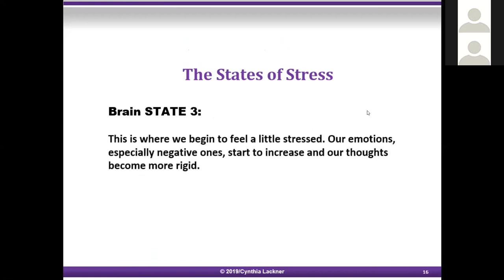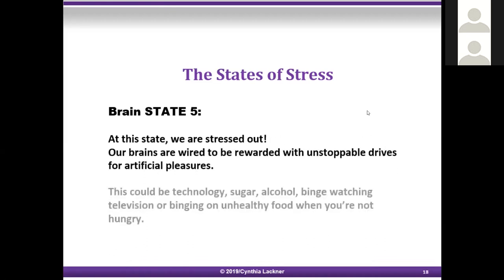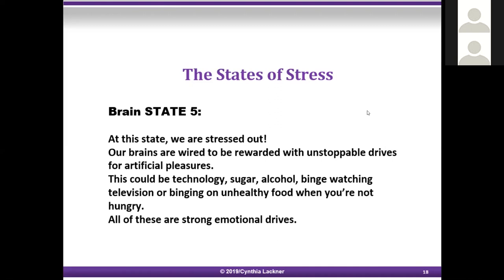Brain state three: this is where we begin to feel a little stressed — our emotions, especially negative ones, start to increase and our thoughts become more rigid. Brain state four: by this state we are definitely stressed, feeling needy or distant and disconnected. Brain state five: we are stressed out — our brains are wired to be rewarded with unstoppable drives for artificial pleasures. This could be technology, sugar, alcohol, binge-watching television, or binging on unhealthy food when you're not even hungry. All of these are emotional drives.